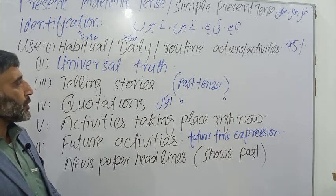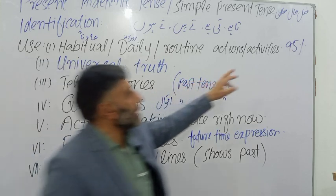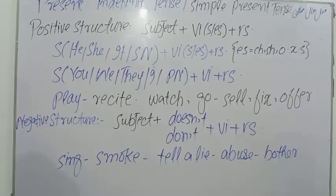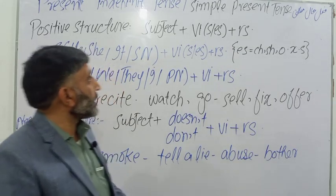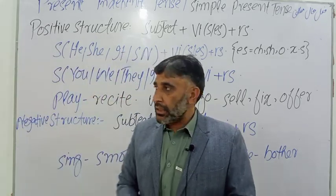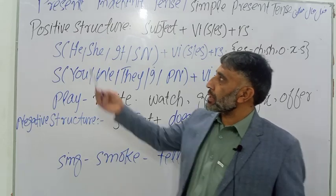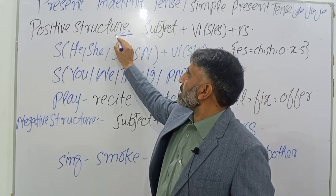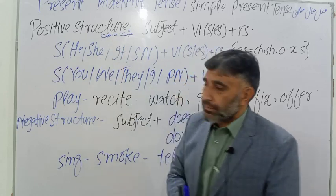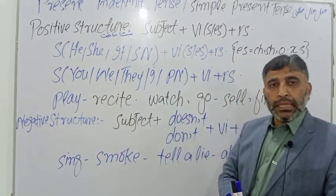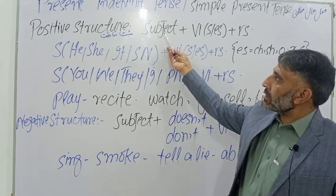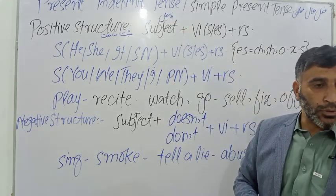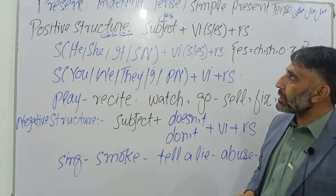Now we are coming to the structure of this tense. For the positive structure: first we use the subject — the doer of the action. For example, in 'Bilal recites the Holy Quran', Bilal is the subject. Then we use verb first form, and with it we sometimes add S or ES. Then the rest of the sentence.